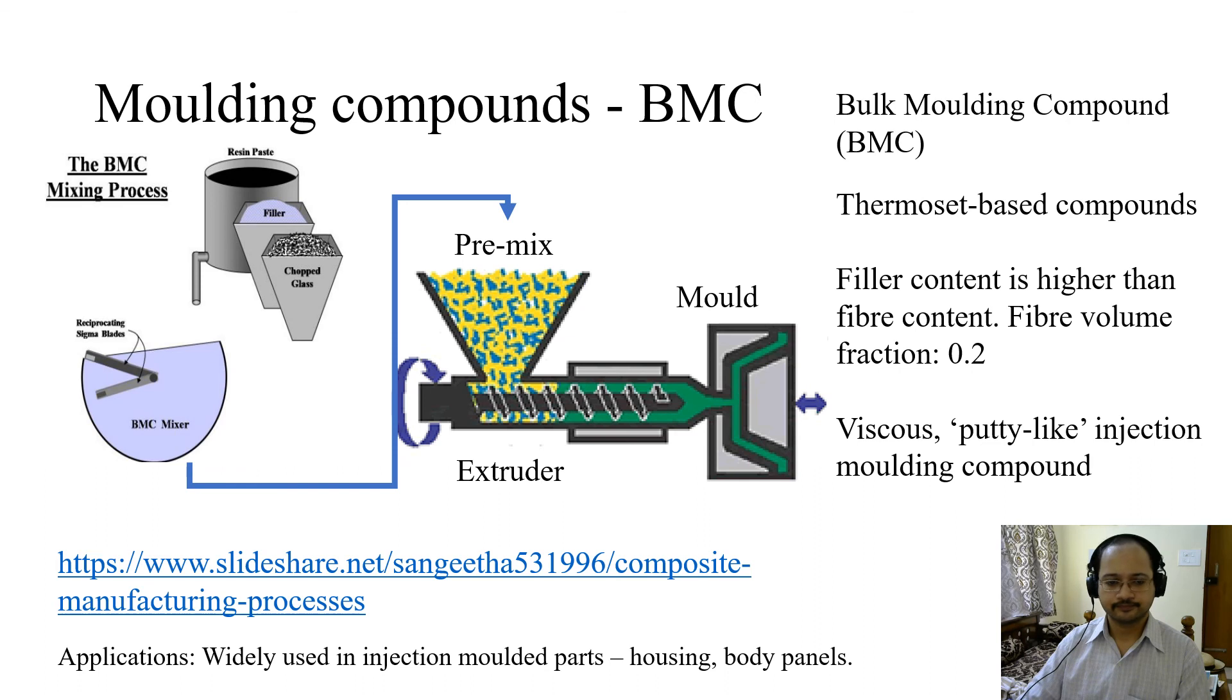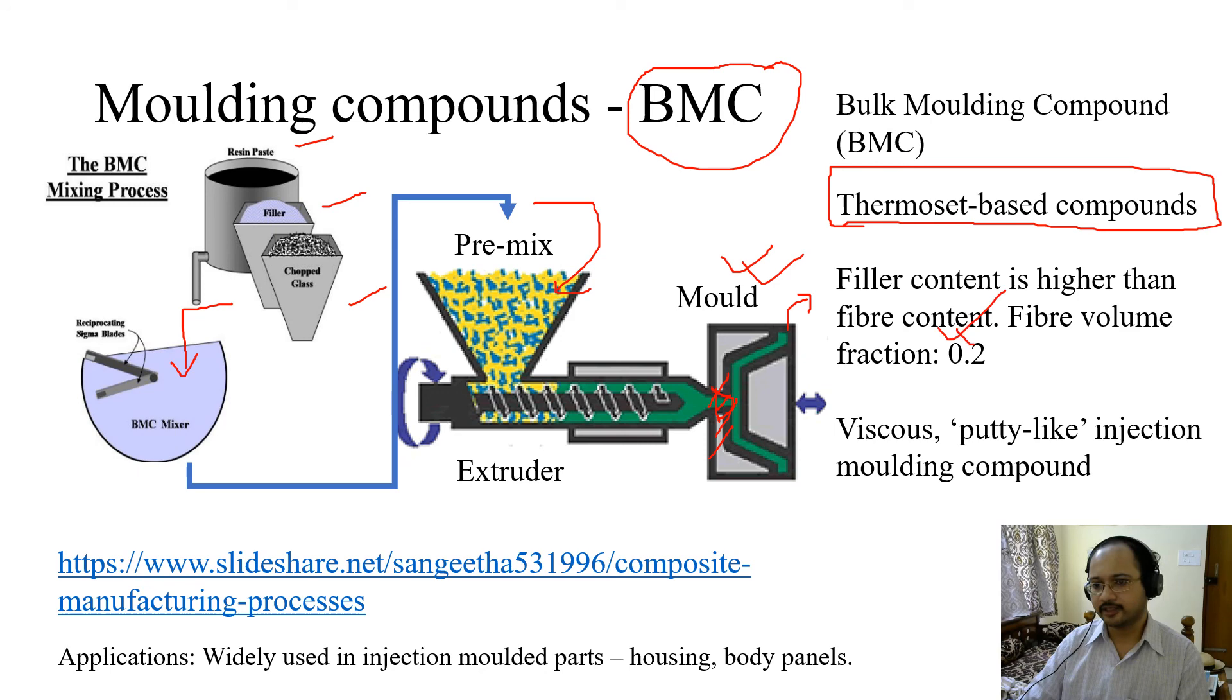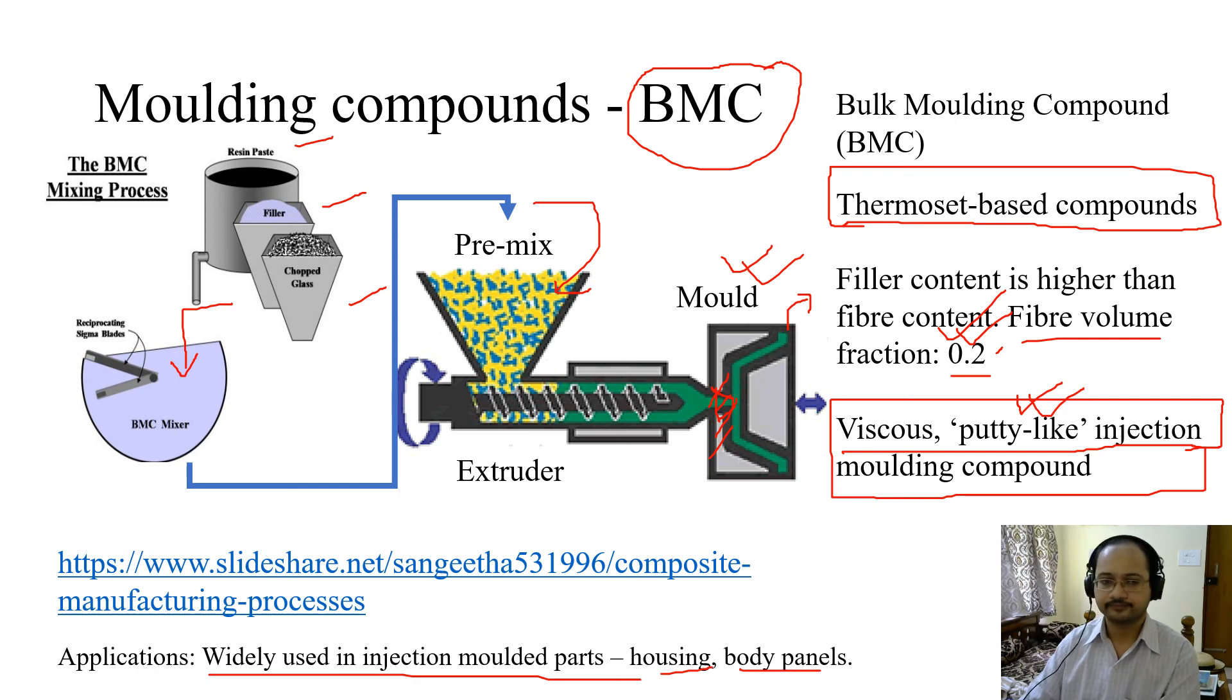Coming to bulk molding compounds (BMC). You have resin paste, filler, and chopped glass. You add them all together. Then put them in the hopper. With the help of an extruder, which is a screwing arrangement, you soften it. Finally, you make the part based on the mold. You may have an extra portion which has to be removed and ground off. BMC is thermoset paste compounds. Filler content is higher than fiber content. Fiber volume fraction is 0.2. For sheet molding compound it was 28%, but this is only 20%. It is a viscous, cookie dough-like injection molding compound. The moment it says cookie dough-like, you understand the texture. It is widely used for injection molded parts, housing, and body panels.